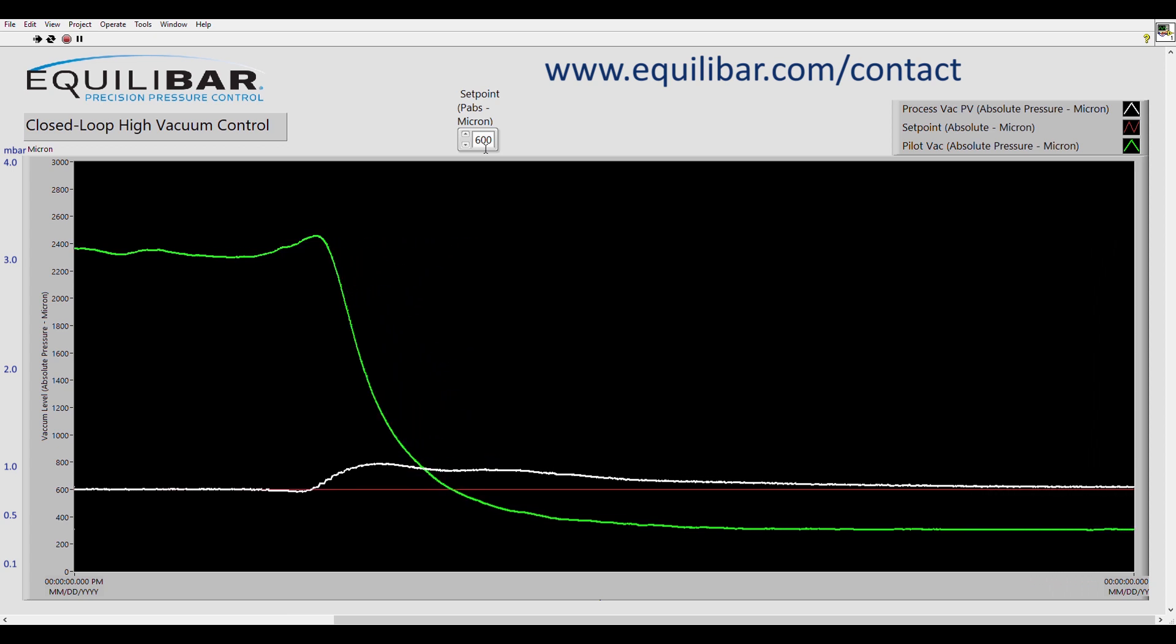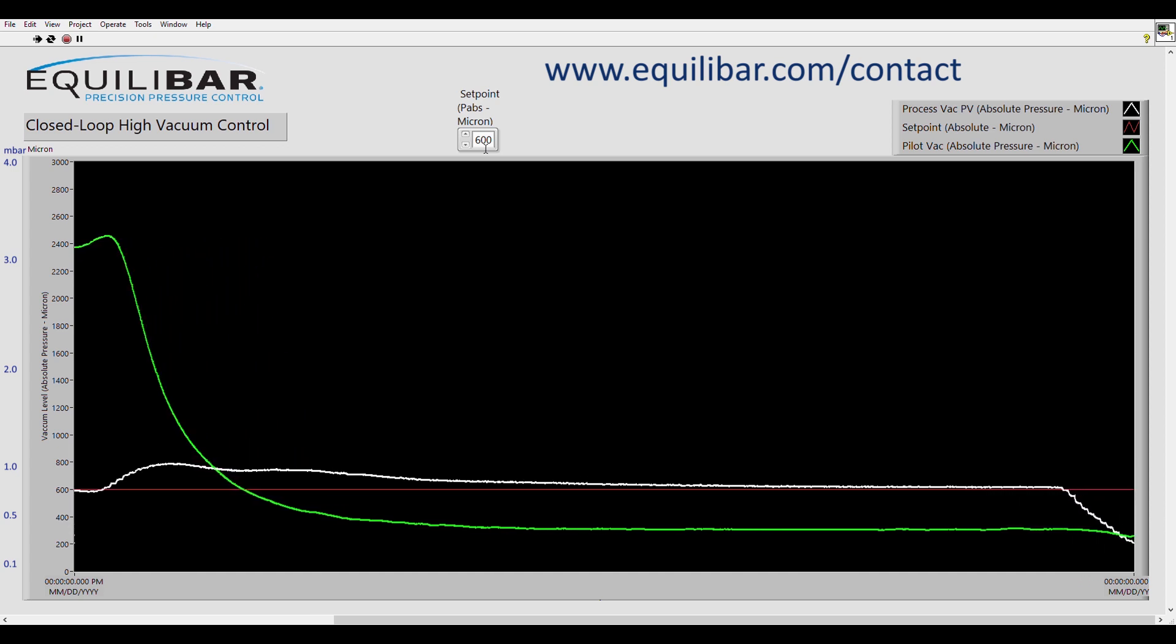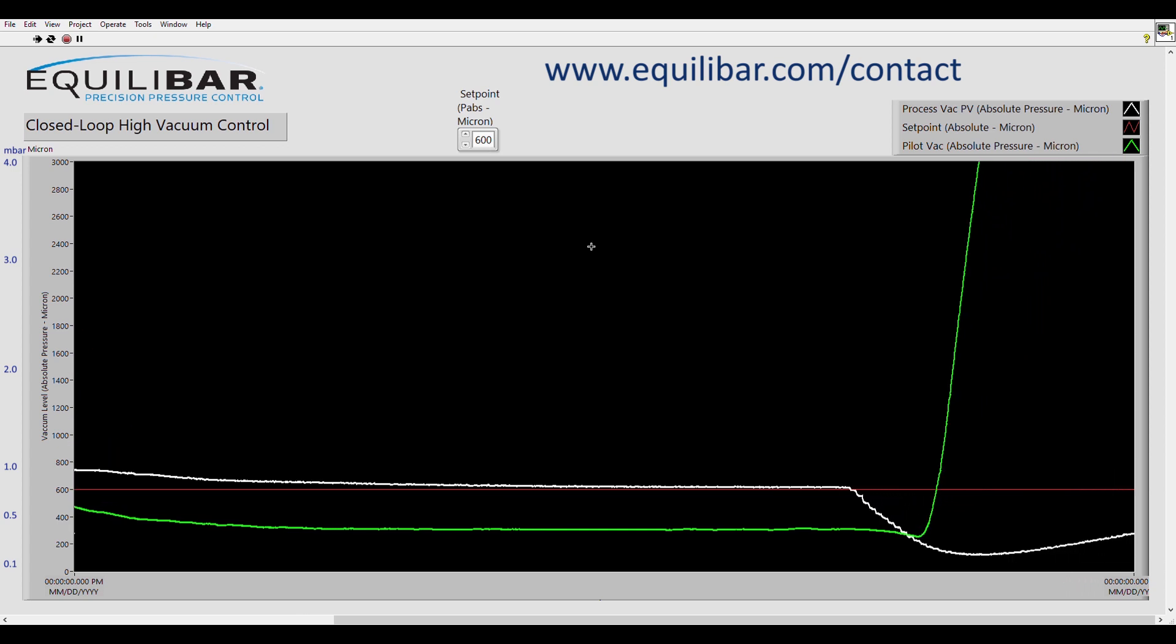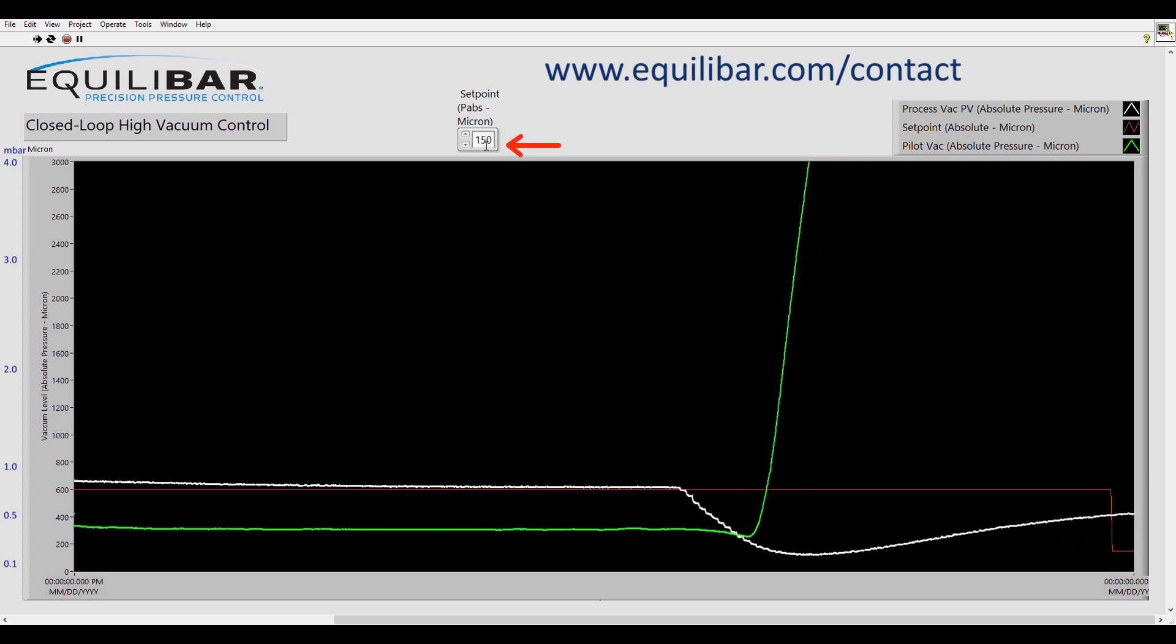Now let's explore the lower absolute pressures. We're going to reduce the mass flow so that our pump has capacity to go down to around 100. We're going to change the set point from 600 to 150 micron.